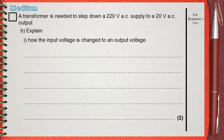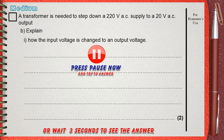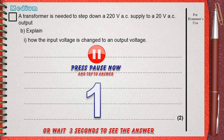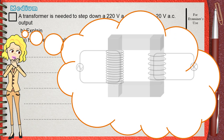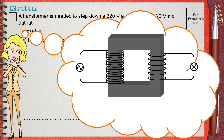This is part B of the previous question: explain how the input voltage is changed to an output voltage in the transformer. To give a full answer to this question, you must first remember how the transformer works. This is a transformer — an AC current, or AC voltage, is supplied to the primary coil on the left.